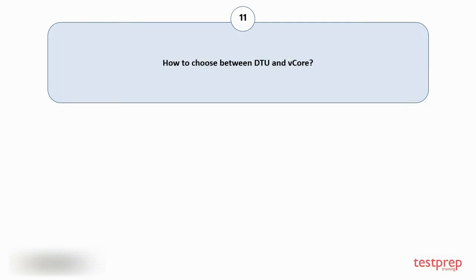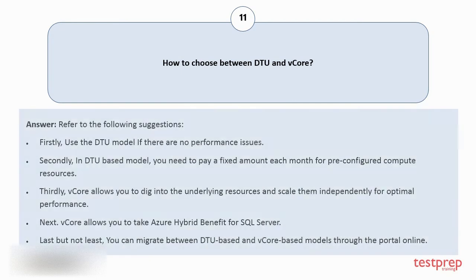Question number 11: How do you choose between DTU and vCore? Firstly, use the DTU model if there are no performance issues. Secondly, in the DTU-based model, you need to pay a fixed amount each month for pre-configured compute resources. Thirdly, vCore allows you to dig into the underlying resources and scale them independently for optimal performance. Next, vCore allows you to take advantage of Azure Hybrid Benefit for SQL Server. Last but not least, you can migrate between DTU-based and vCore-based models through the portal online.